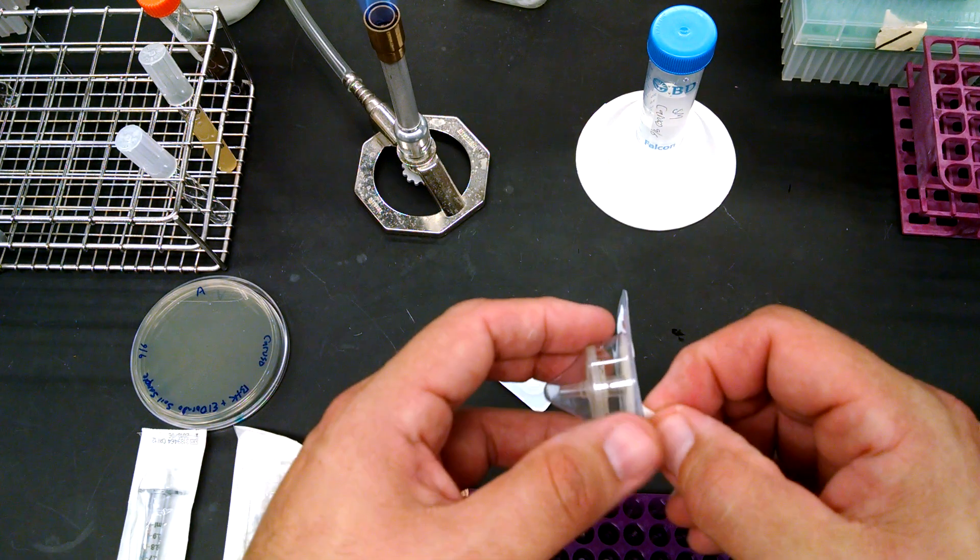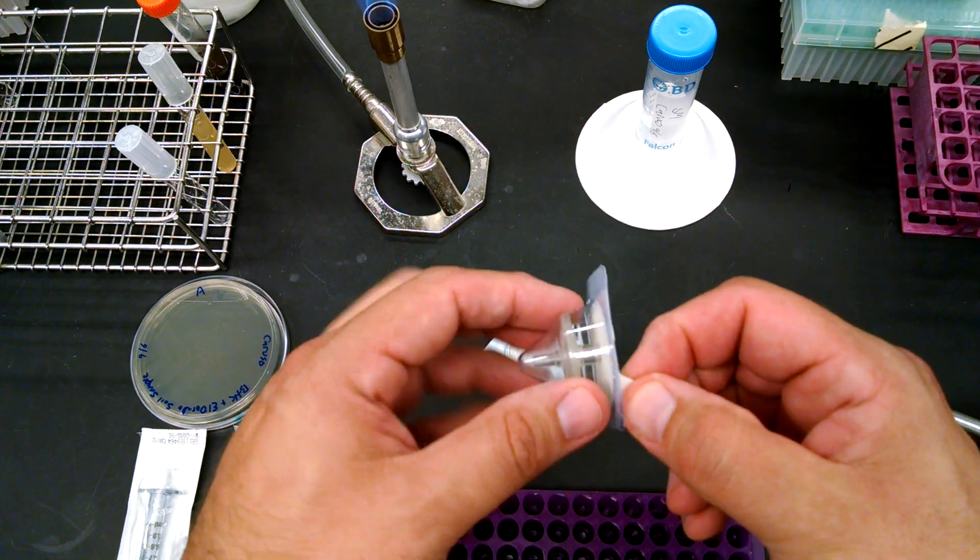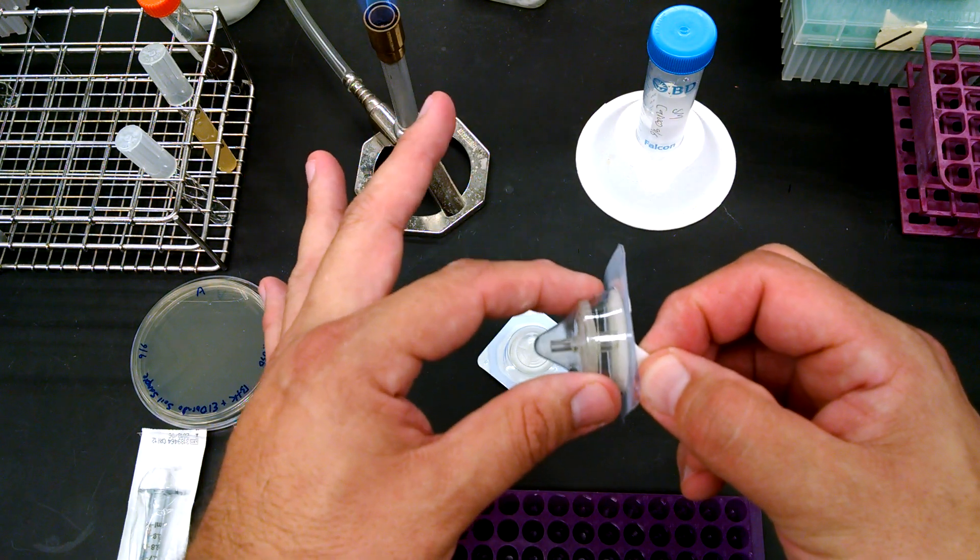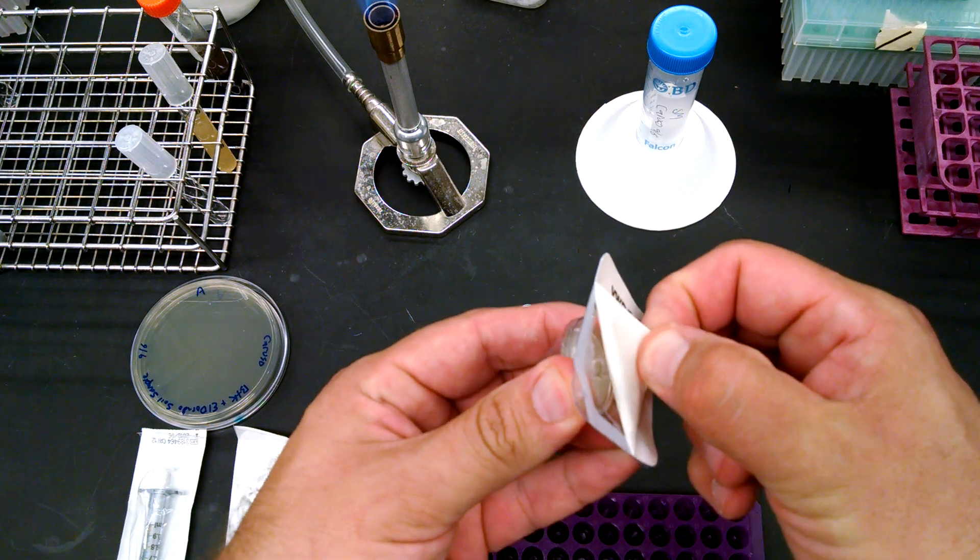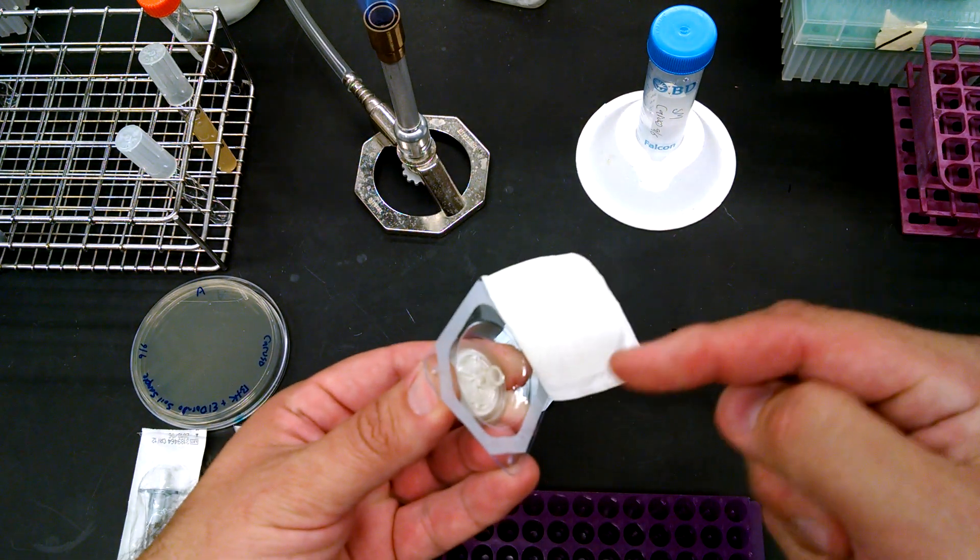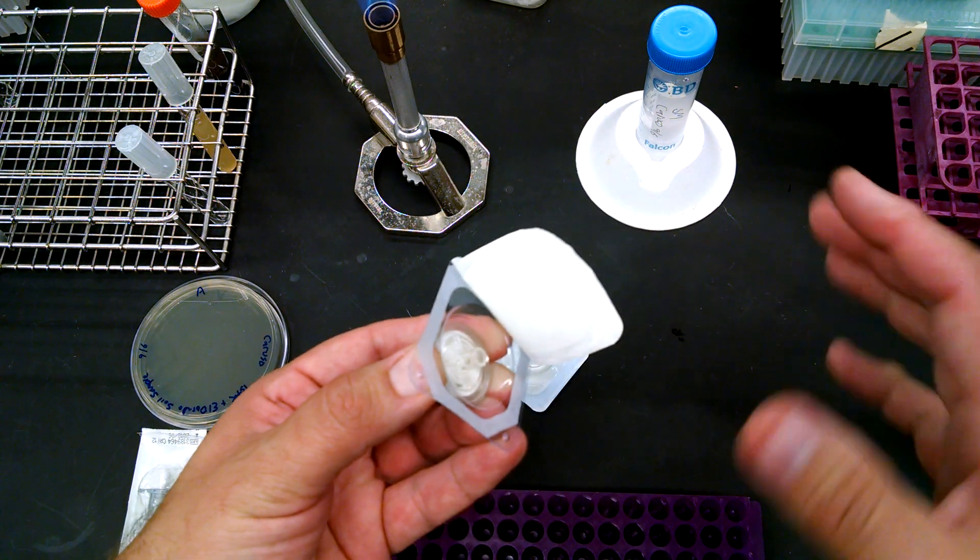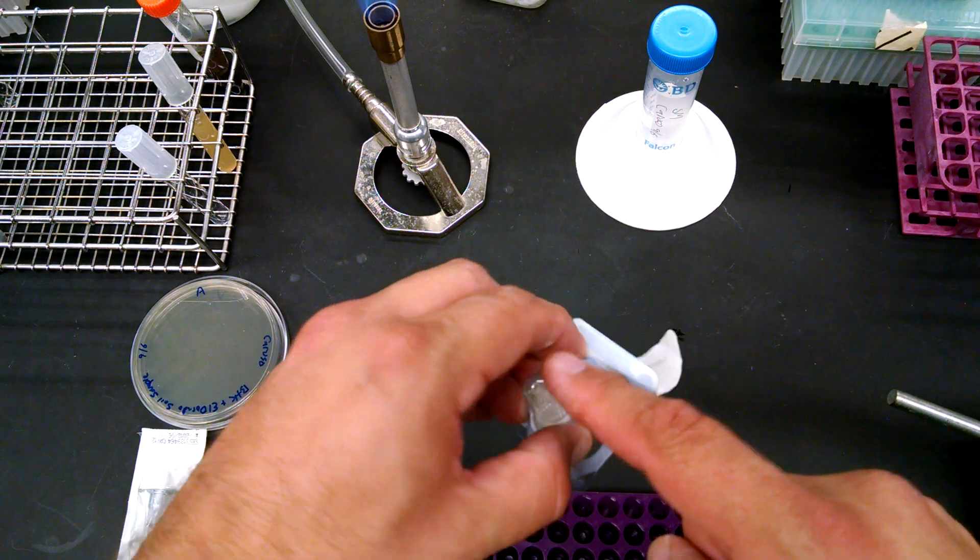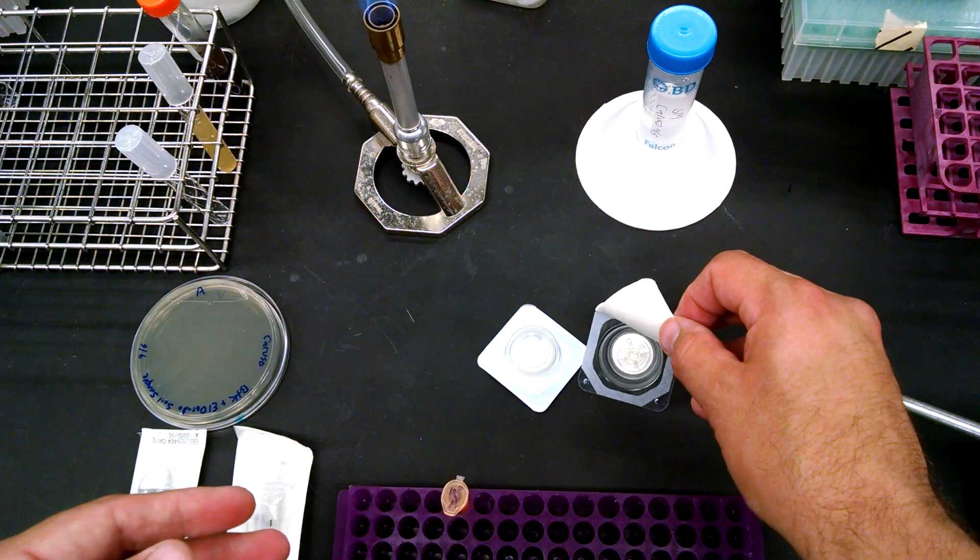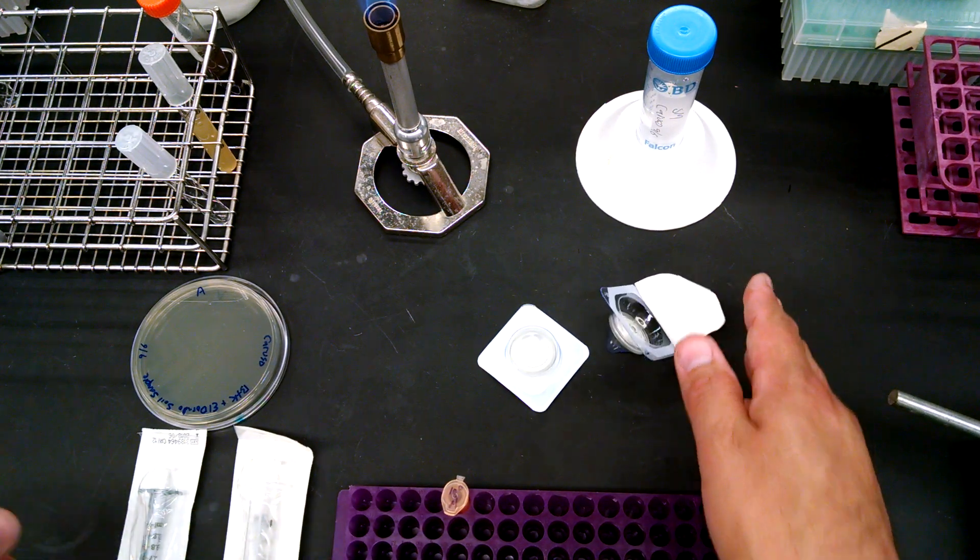And so I'll demonstrate that here and show you how you can use these filters. Now when you're doing this, what you want to do is you want to open one of these filters, grasp the sides of the disc, and just peel this off and then leave it in the container because you don't want to touch it, right? Definitely not this side, okay? And then just kind of place it down out of the way.